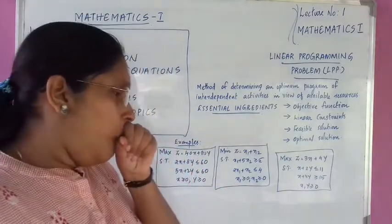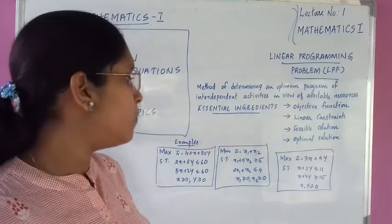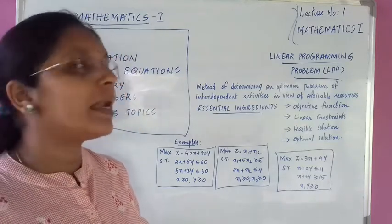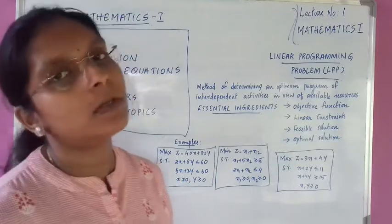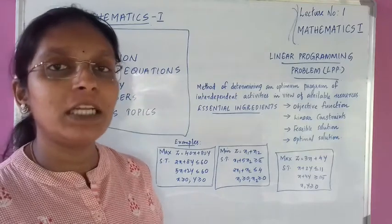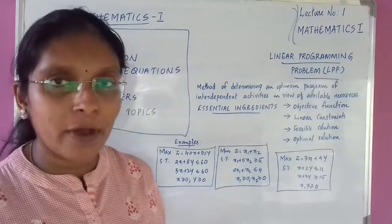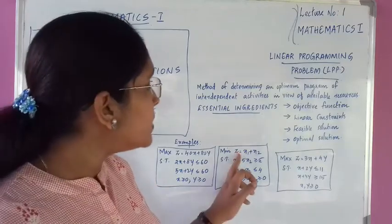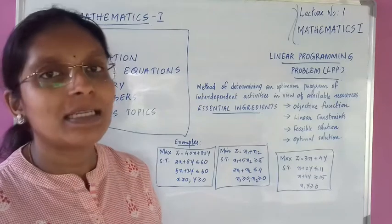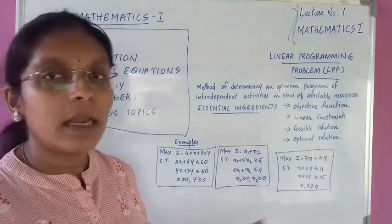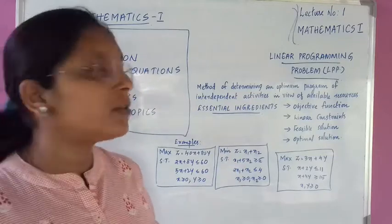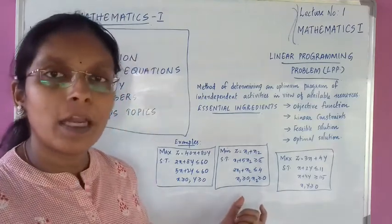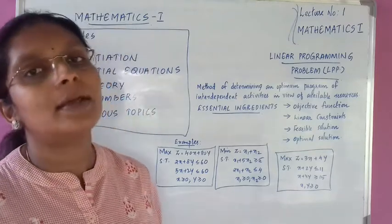Example 2: Minimize Z = x₁ + x₂, subject to x₁ + 5x₂ ≥ 5, 2x₁ + x₂ ≤ 4, x₁ ≥ 0, x₂ ≥ 0. The objective function is Z = x₁ + x₂. There are two non-negative constraints: x₁ ≥ 0 and x₂ ≥ 0.